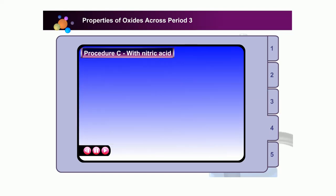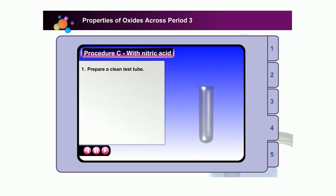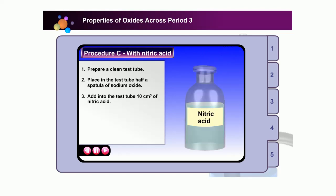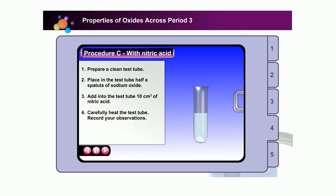Let's investigate the reaction of period 3 oxides with an acid. First, prepare a clean and dry test tube. Place half a spatula of sodium oxide in the test tube. Then, add into the test tube 10 cubic centimeters of nitric acid. Handle the test tube with a test tube holder and carefully heat the mixture. Remember not to boil the mixture. Is sodium oxide soluble in a warm nitric acid solution? Is there any change in color?